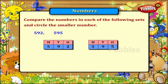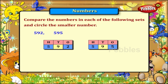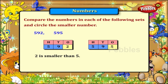592 and 595. The numbers in the hundreds place are the same, so now compare the numbers in the tens place. The numbers in the tens place are also the same, so now compare the numbers in the ones place. 2 is smaller than 5, so 592 is smaller than 595.